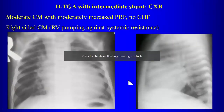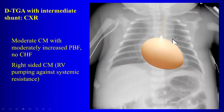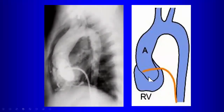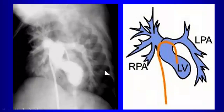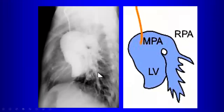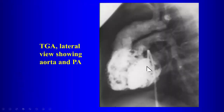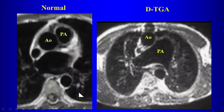The egg-on-the-string appearance features a narrow mediastinum, increased pulmonary blood flow, cyanosis, and some degree of cardiomegaly. The right ventricle is connected to the aorta, which is anterior to the pulmonary artery, while the left ventricle connects to the pulmonary artery posteriorly. On a lateral image, the aorta can be seen anterior to the pulmonary artery. If we see the aorta anterior and to the right of the pulmonary artery, we suspect D-transposition.